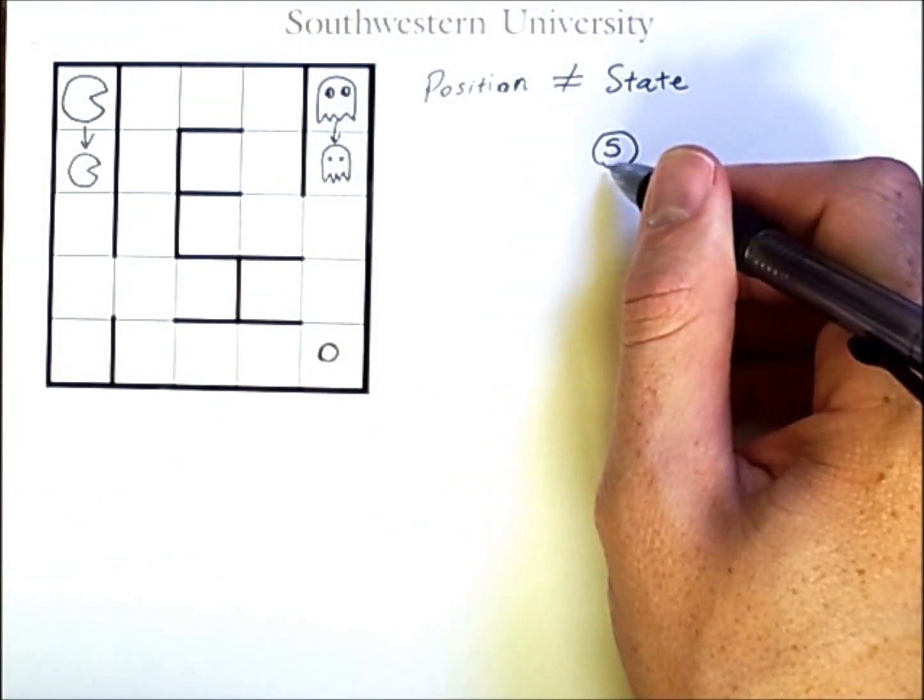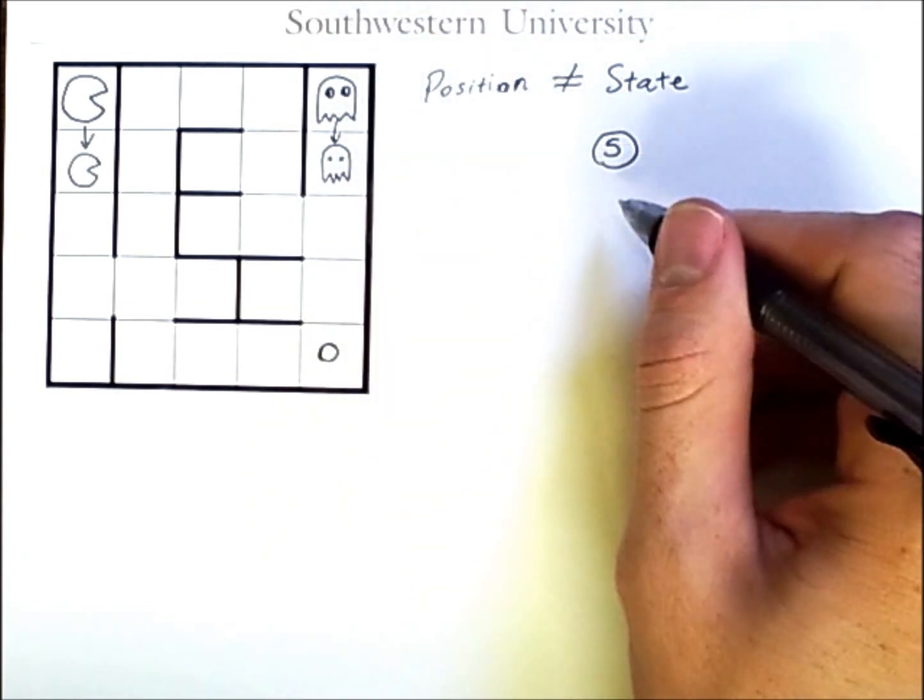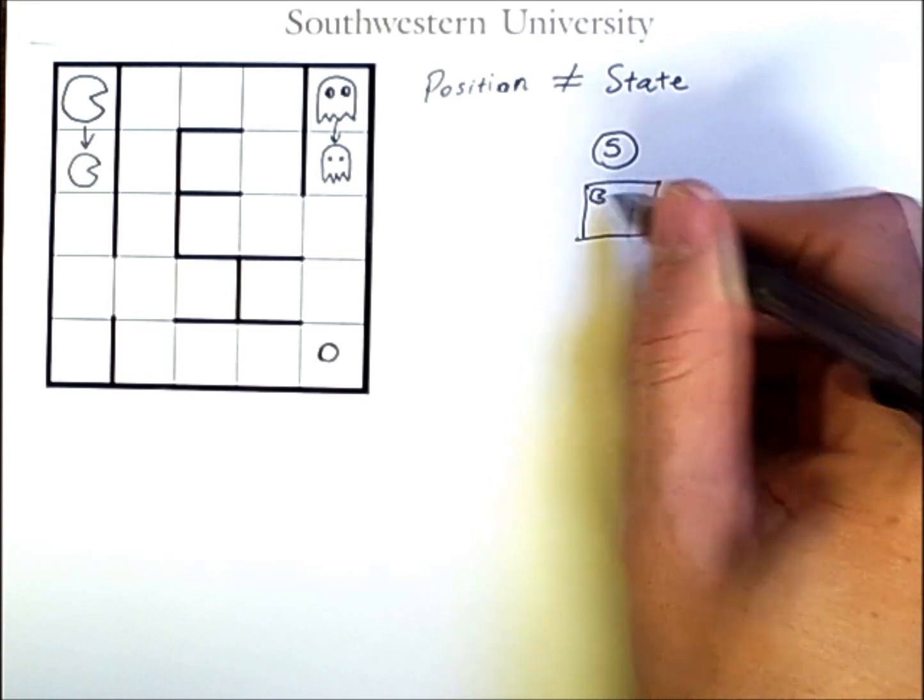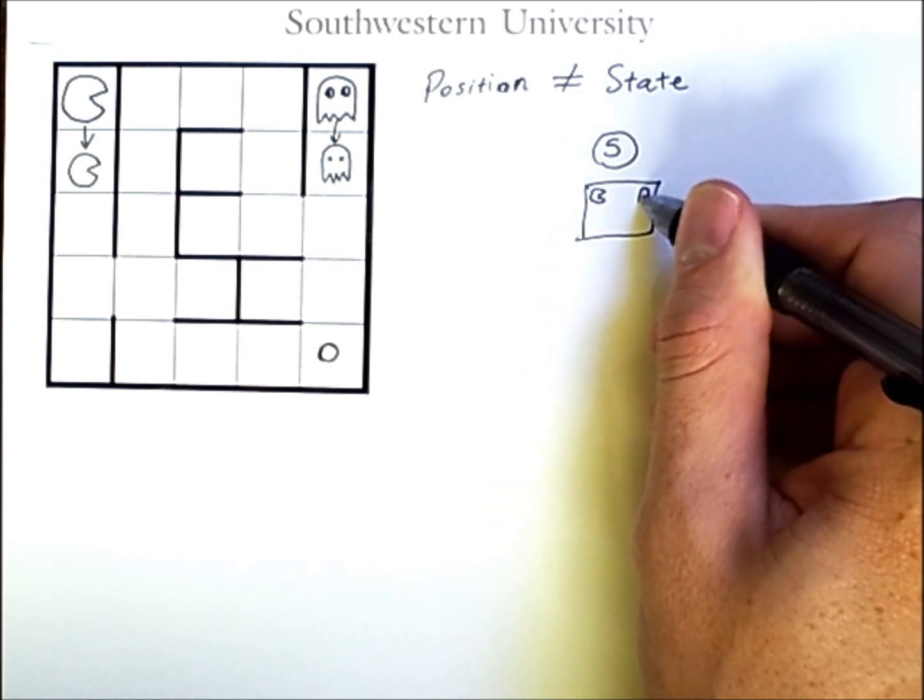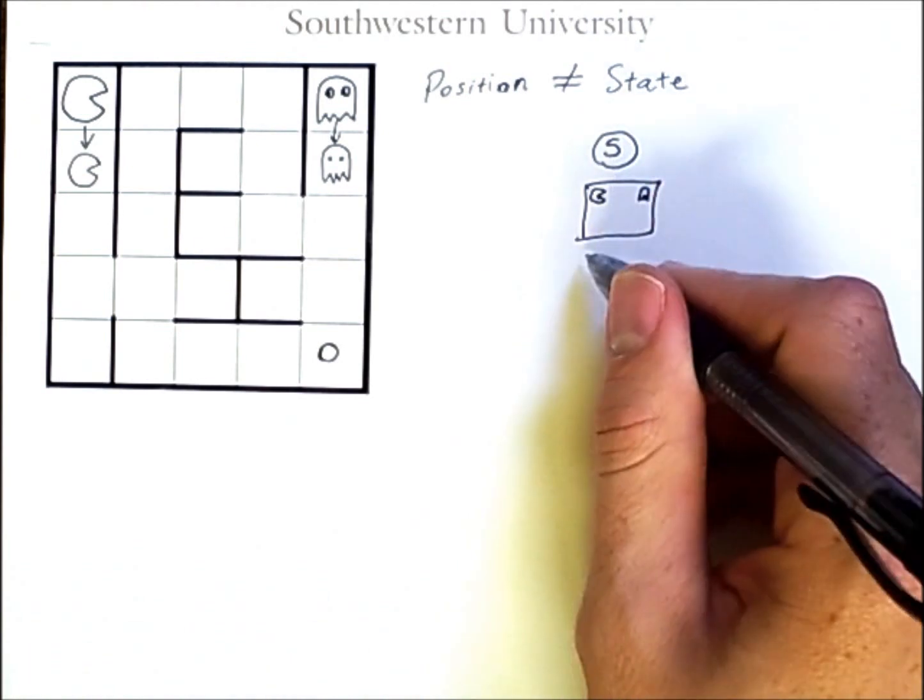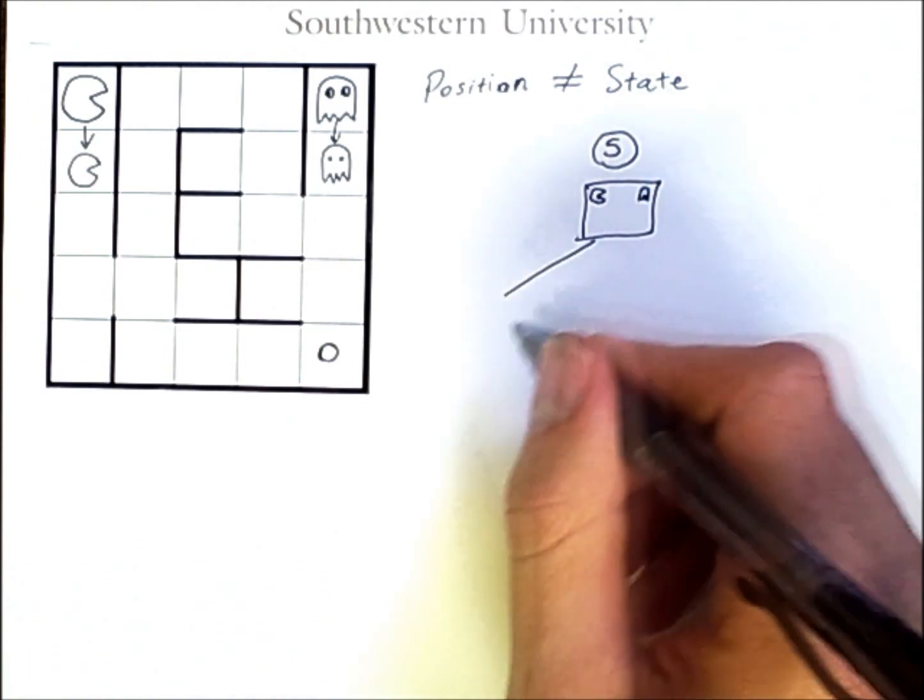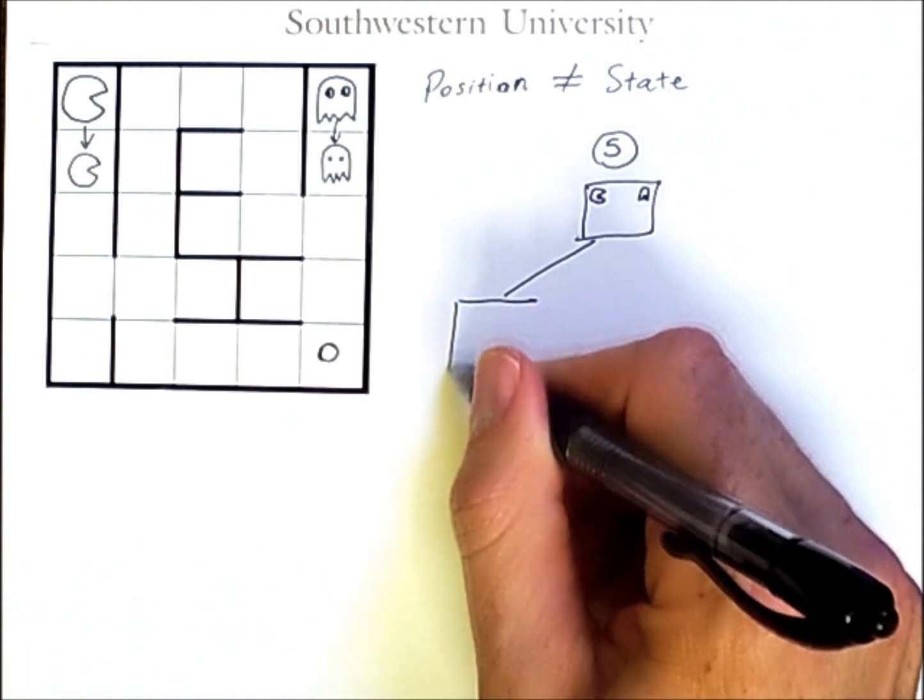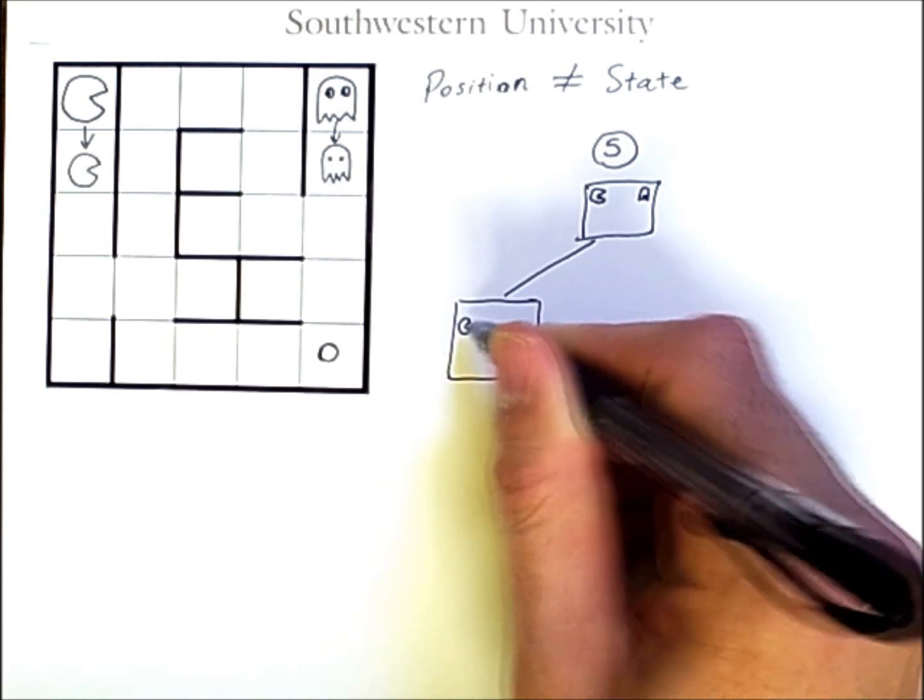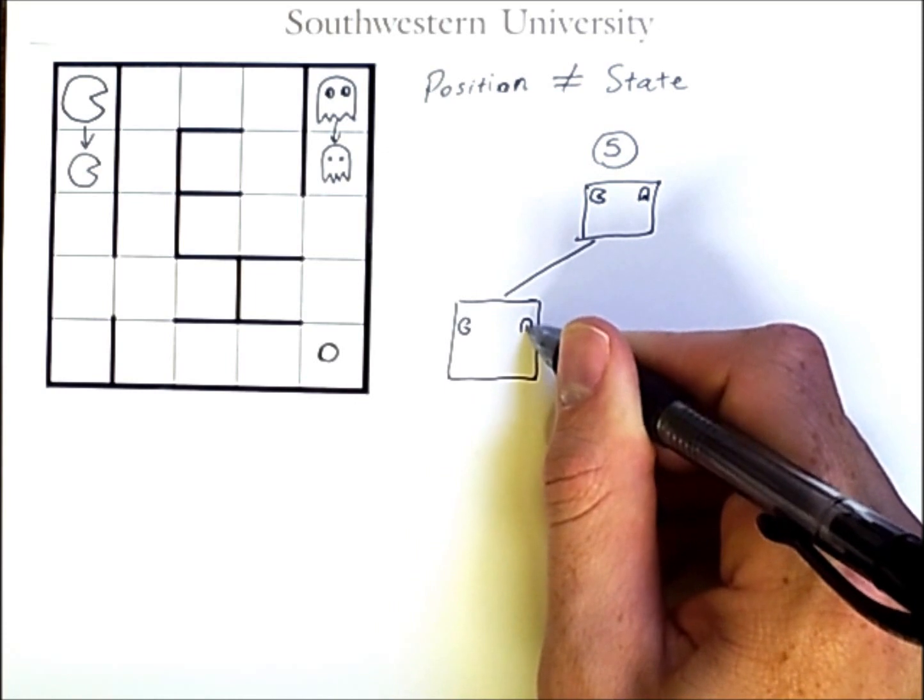This state, which was actually the whole previous maze, leads to a state where both agents are one step down.